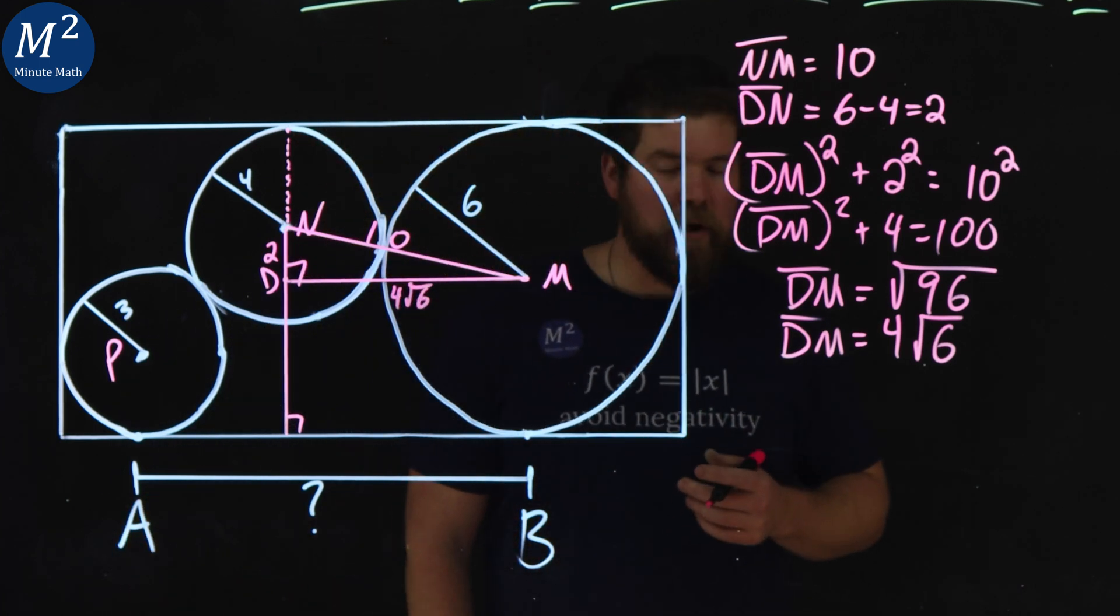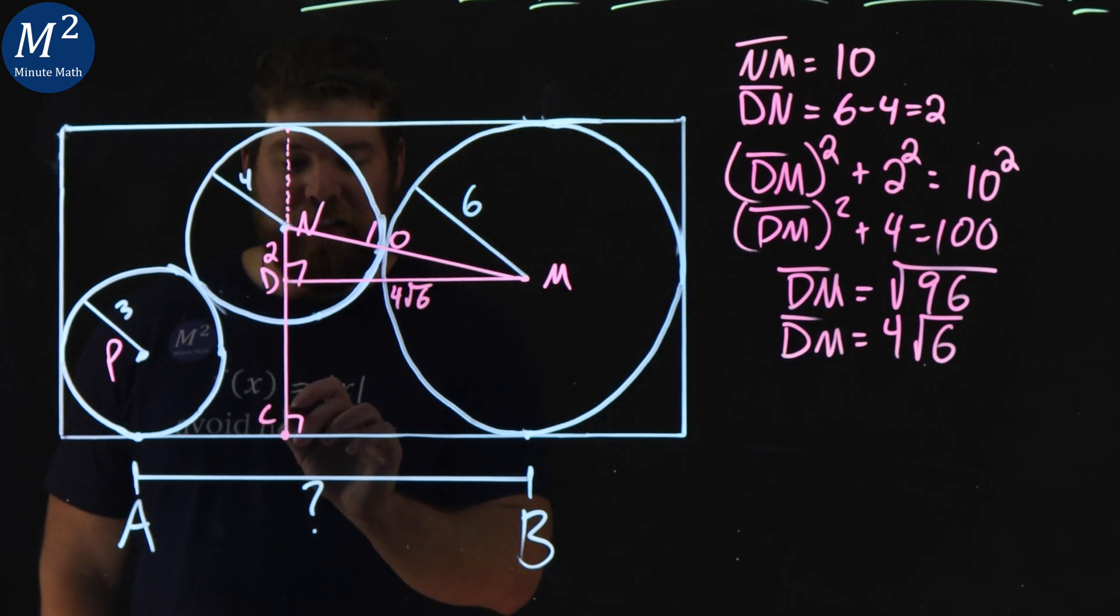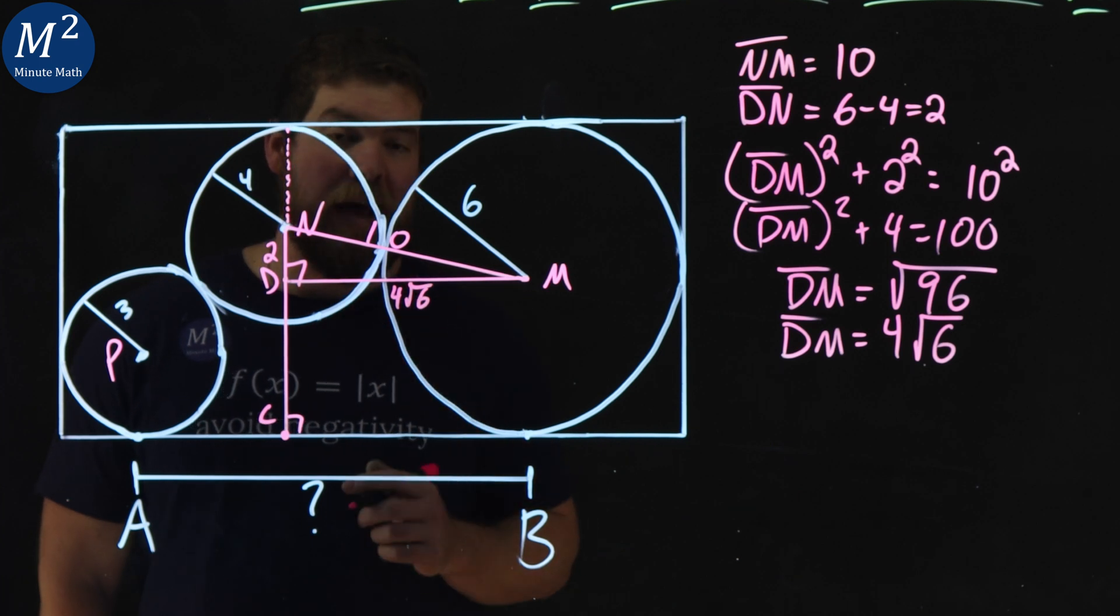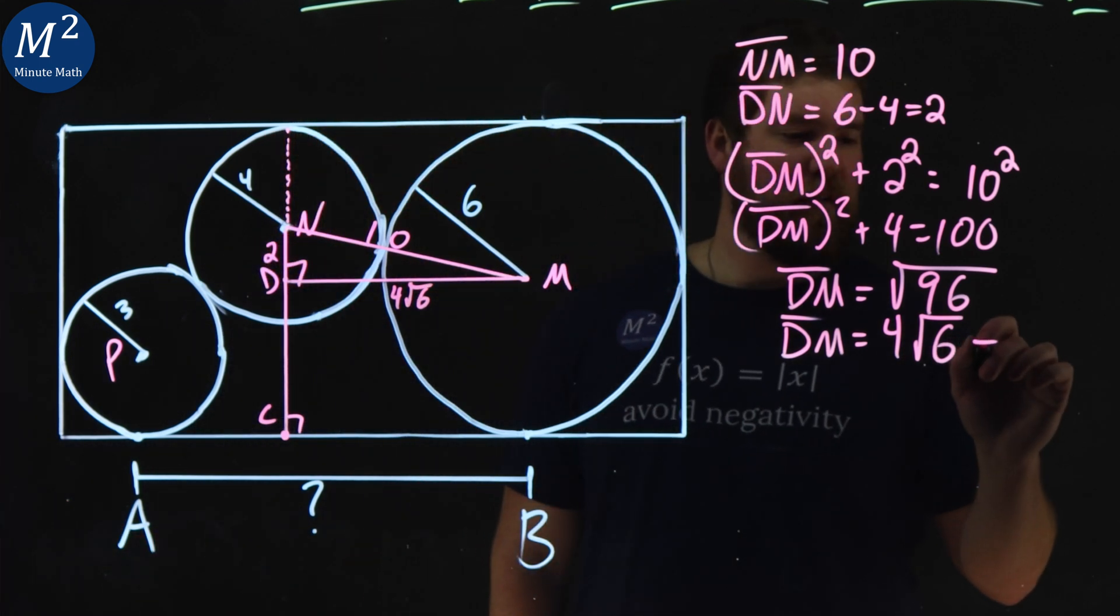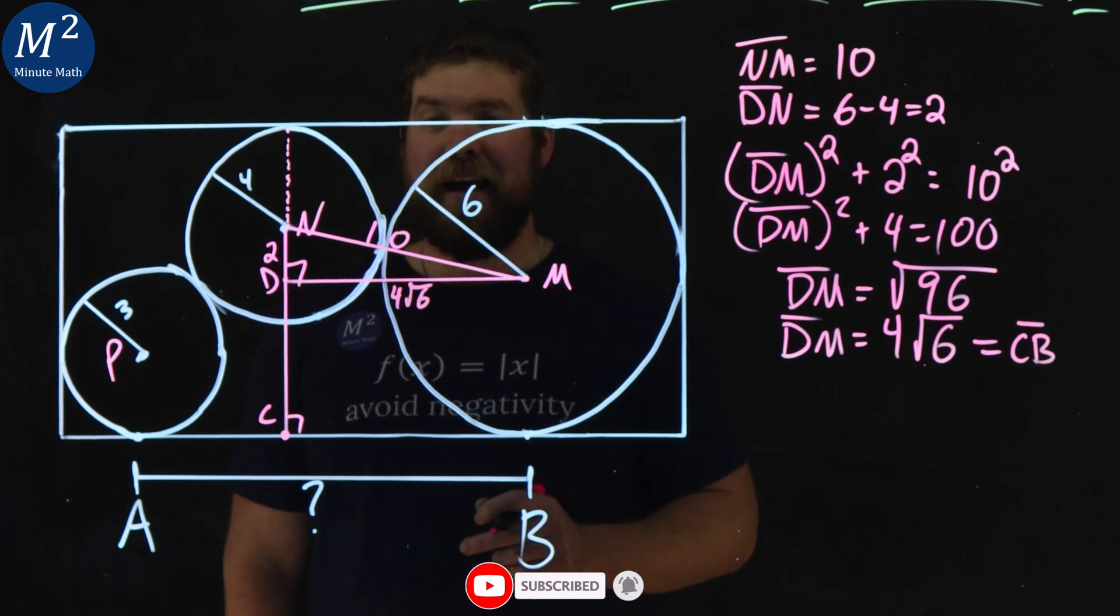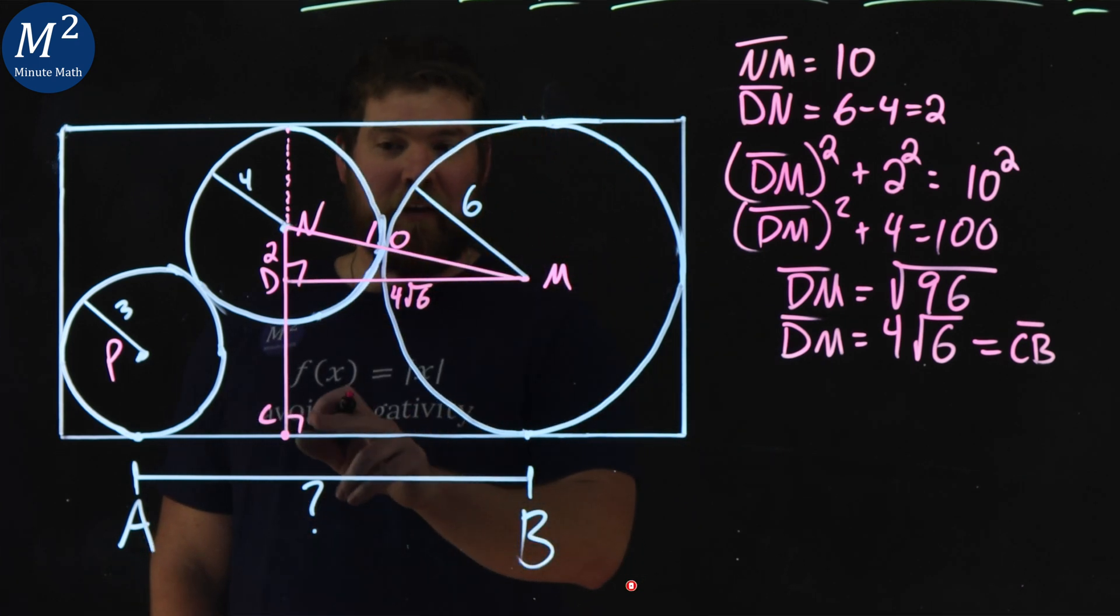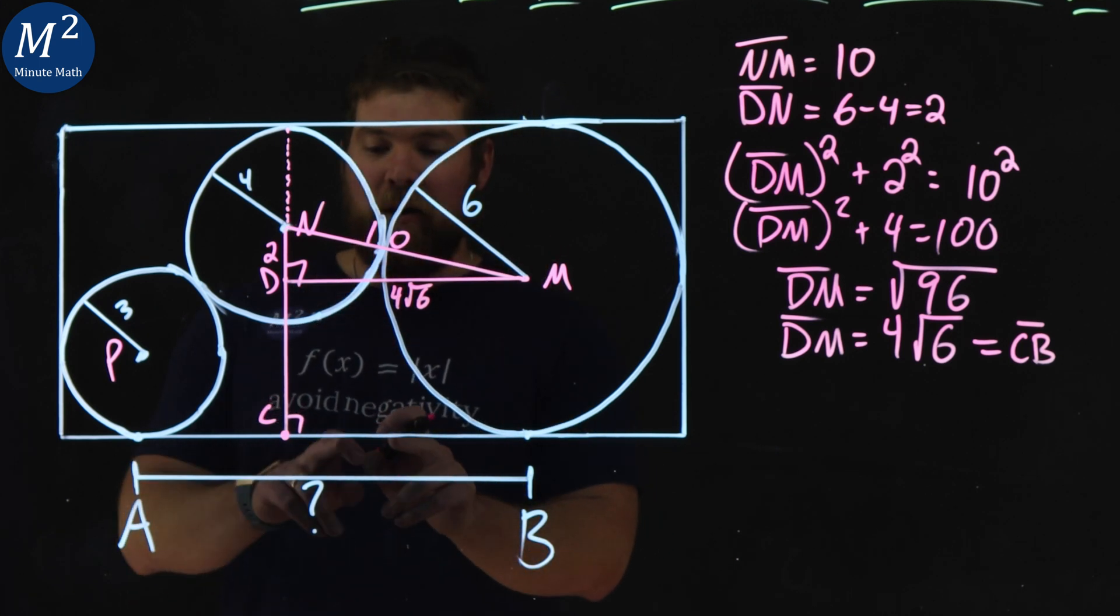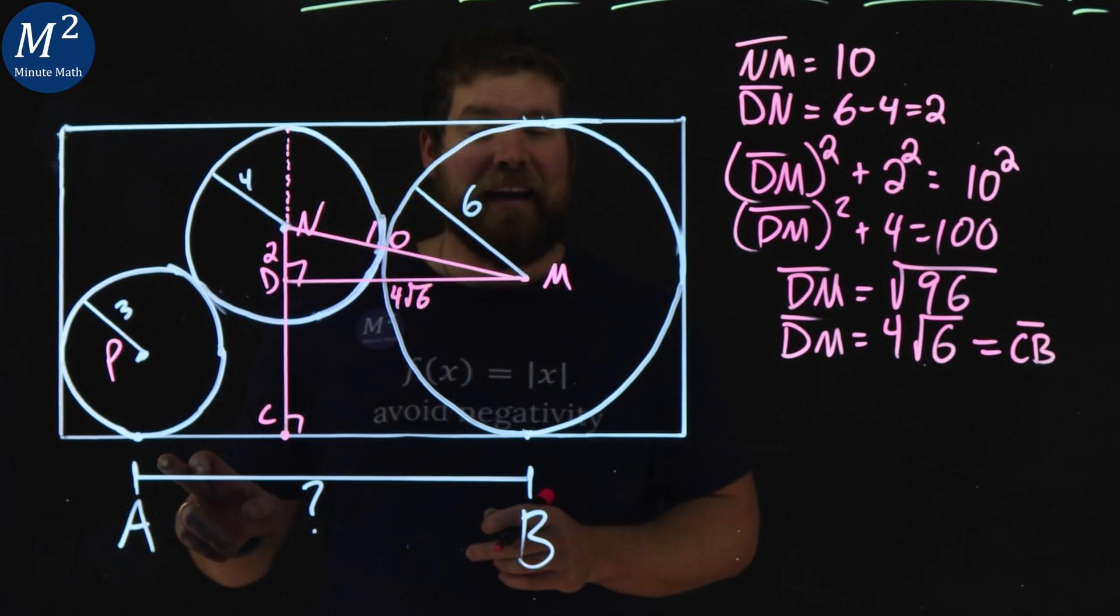Now, how is that helpful for us? Well, let's call this point down here C, and CB has the same exact length. So we have the length here of CB, which is also DM. So we got that length. If we can get the length of CB here, it's the same length of DM, we just need the other half. We need to get AC.